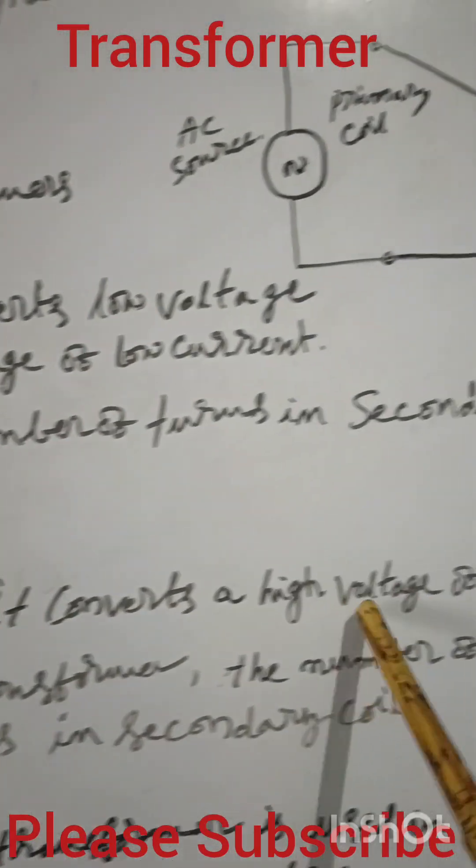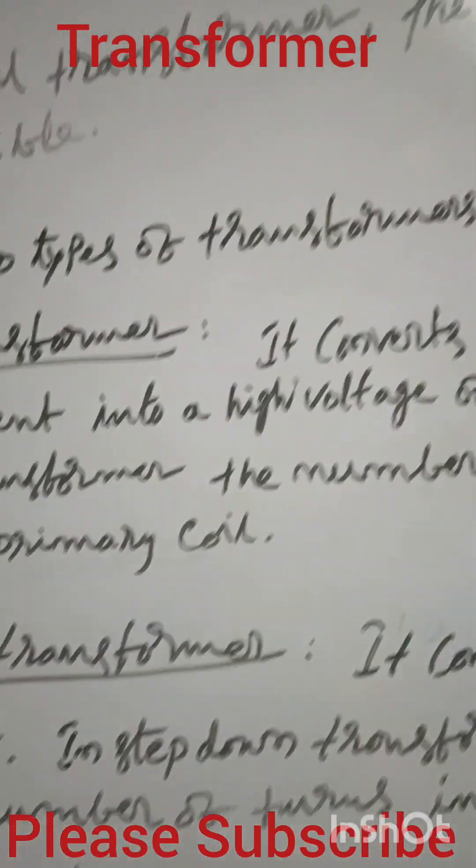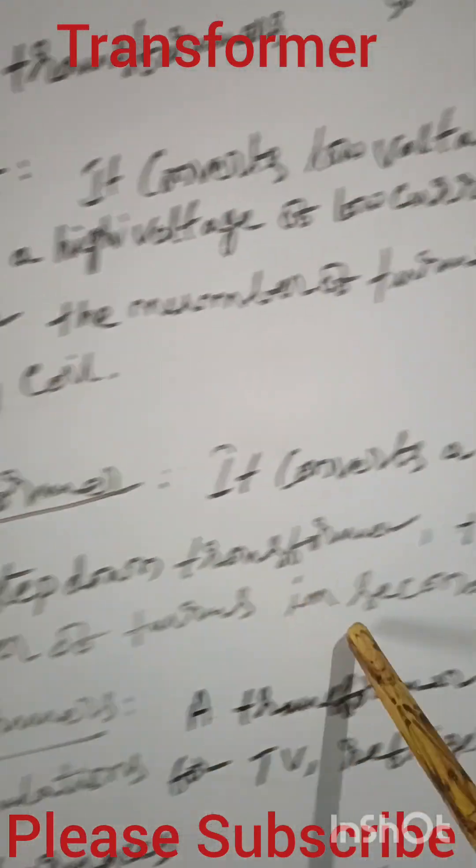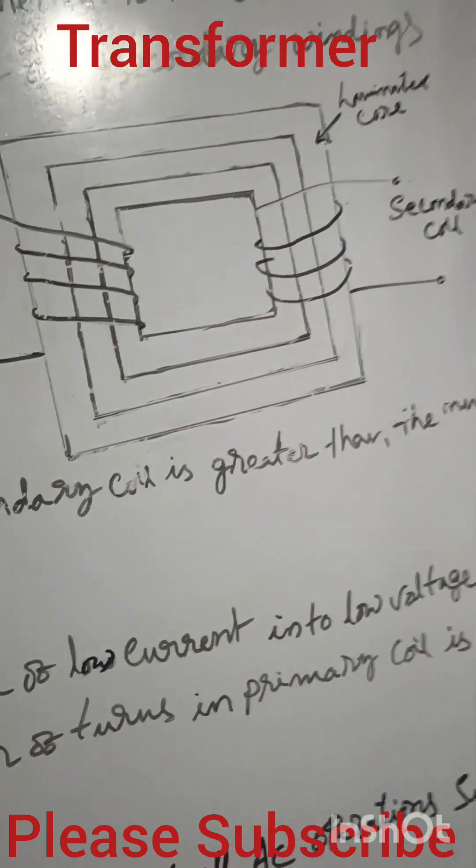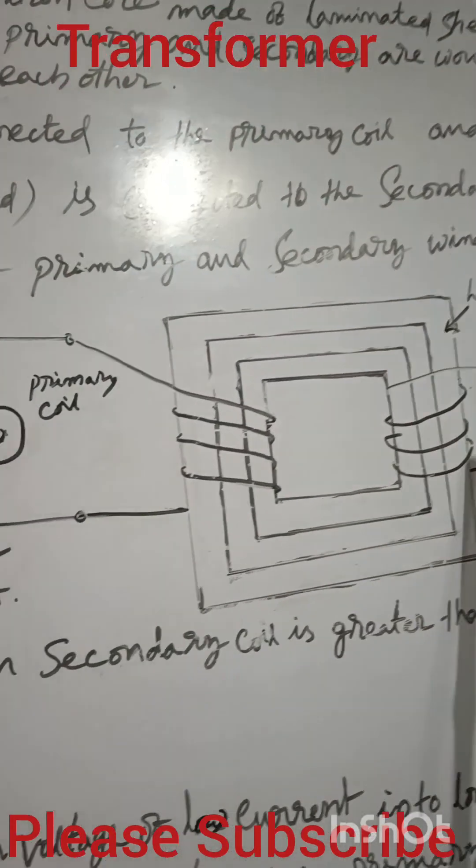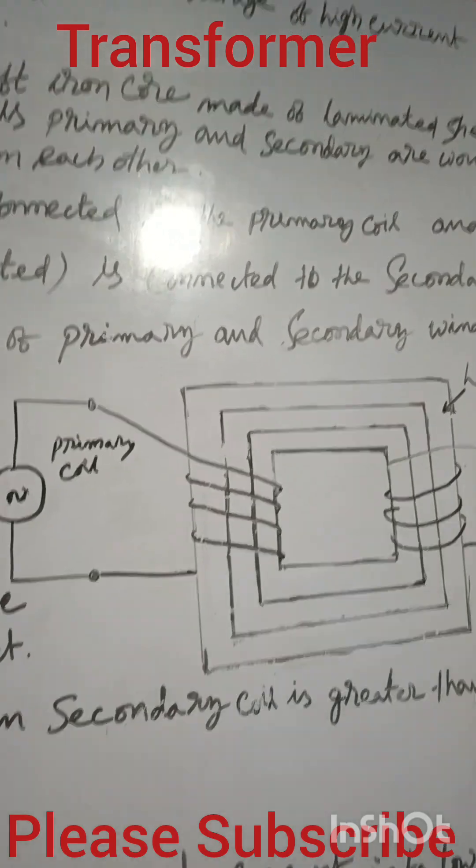Step down transformer converts a high voltage of low current into a low voltage of high current. Step down means lower voltage. We are only talking about voltage. Step down means higher voltage is supplied, low voltage is taken out. So in step down, the number of turns in the primary coil is greater than the number of turns in the secondary coil. So number of turns less, the output voltage is also less.